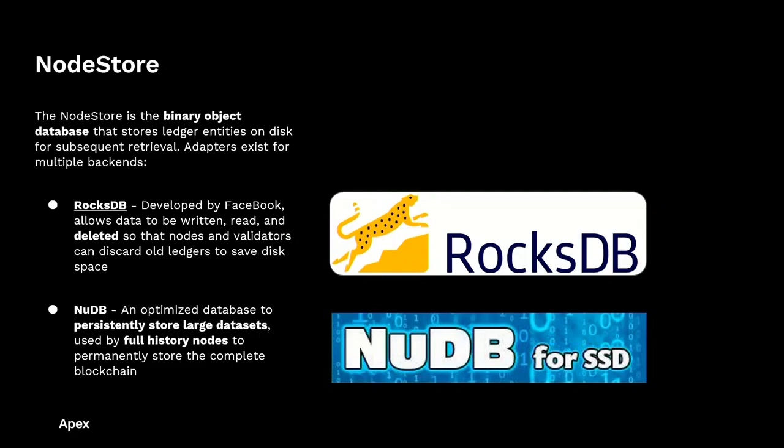The node store is a subsystem responsible for persisting binary objects to disk. Currently it implements two backends: RocksDB and NuDB. Being open source software, everyone is welcome to extend it to add whichever backend they choose. RocksDB was developed by Facebook and allows data to be read, written, and most importantly deleted, such that nodes can discard old data to save disk space. NuDB facilitates optimized access to large data sets, but conversely data cannot be deleted and it takes up more disk space. Currently, full history nodes require the use of NuDB.